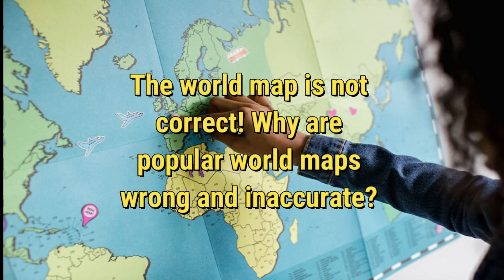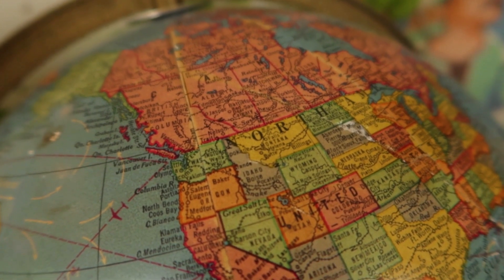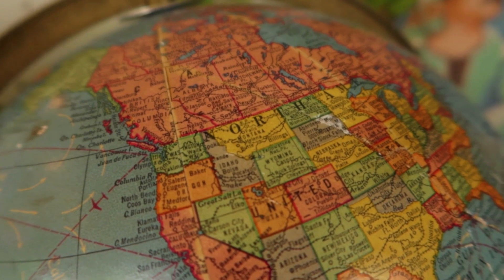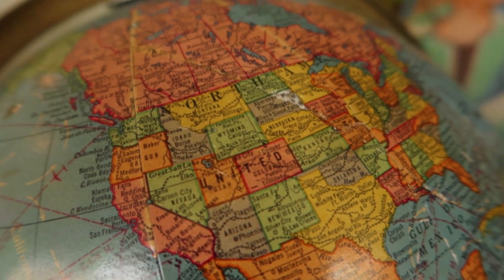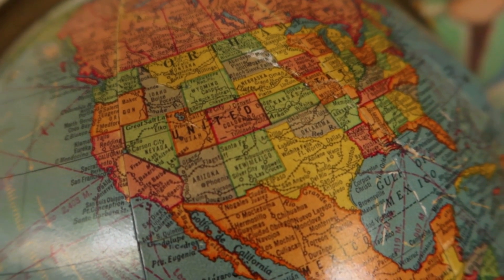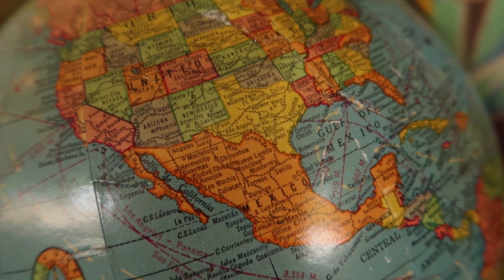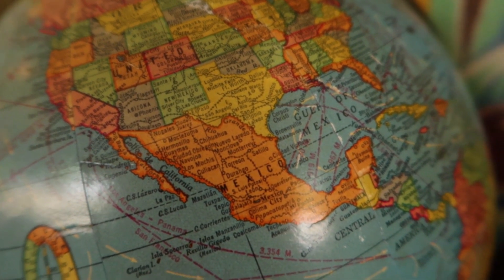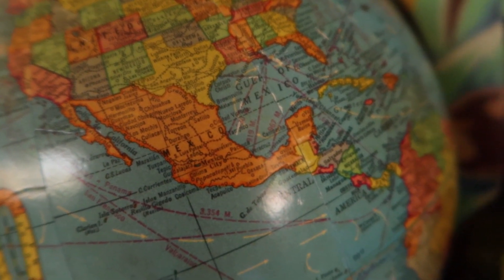Welcome to a new video. The world map is not correct. Why are popular world maps wrong and inaccurate? It is well known that maps' primary function is to define the dimensions and features of countries and regions, and to represent a simplified form of the world. But what will shock you is the fact that the world map that accompanied us in geography books from childhood until today is completely wrong in dimensions and measures.